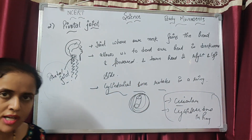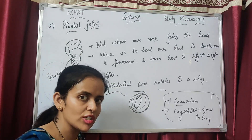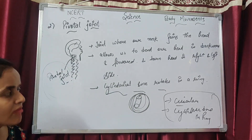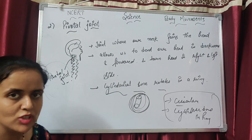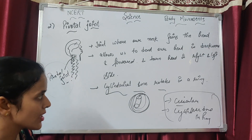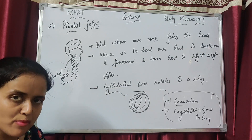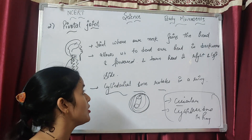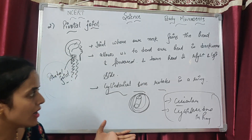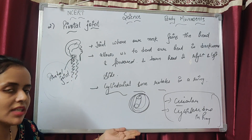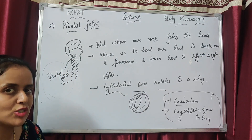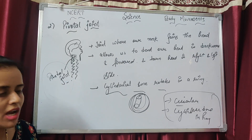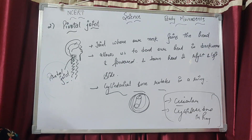So, to summarize: we are studying movable joints. First is the ball and socket joint and second is the pivotal joint. We are not studying immovable or fixed joints yet — that will come later. Now let's come to the third movable joint.